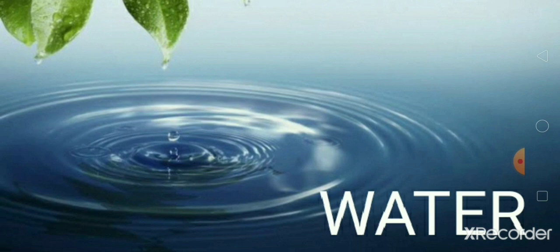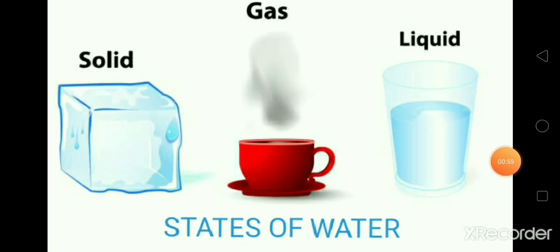But on earth water is present or it exists in three states. Let us discuss about the three states of water. These three states are solid, liquid and gas. These states are interchangeable.